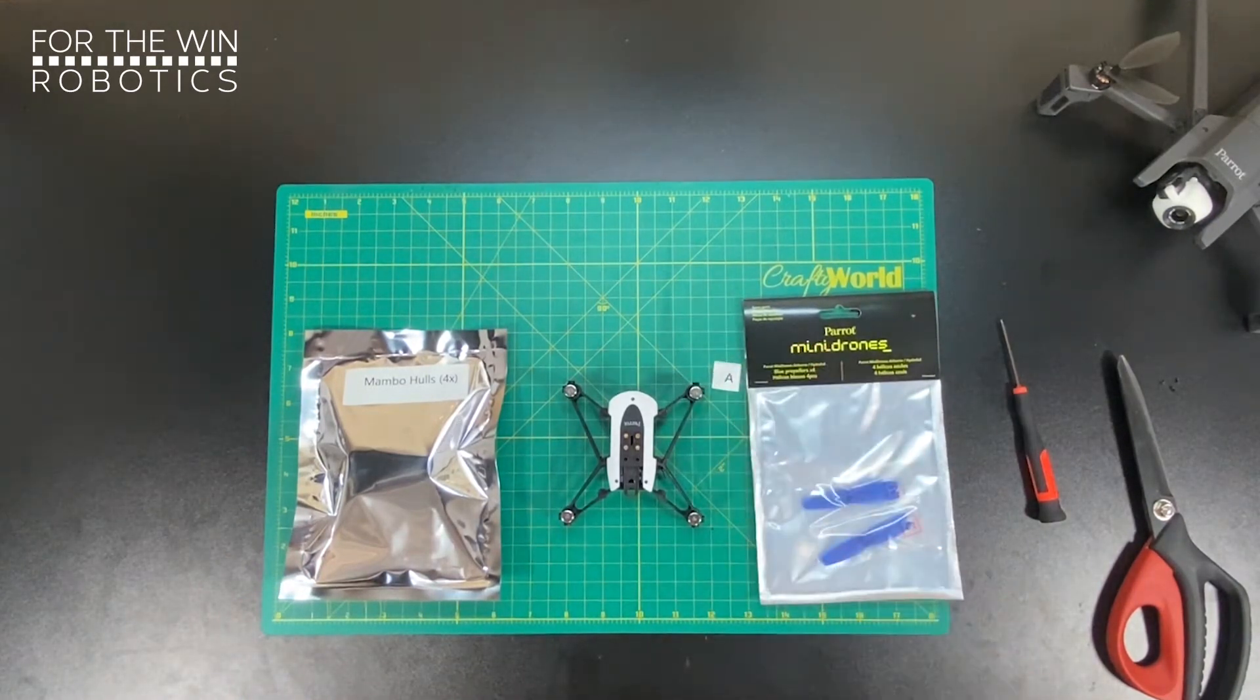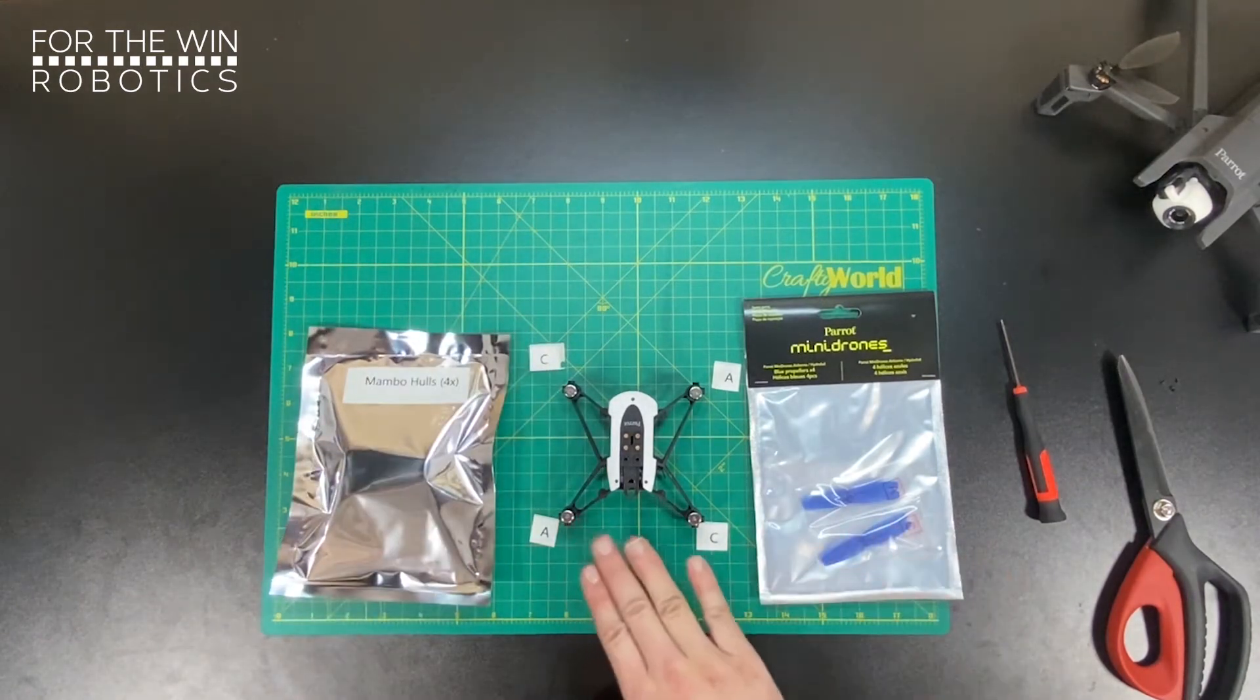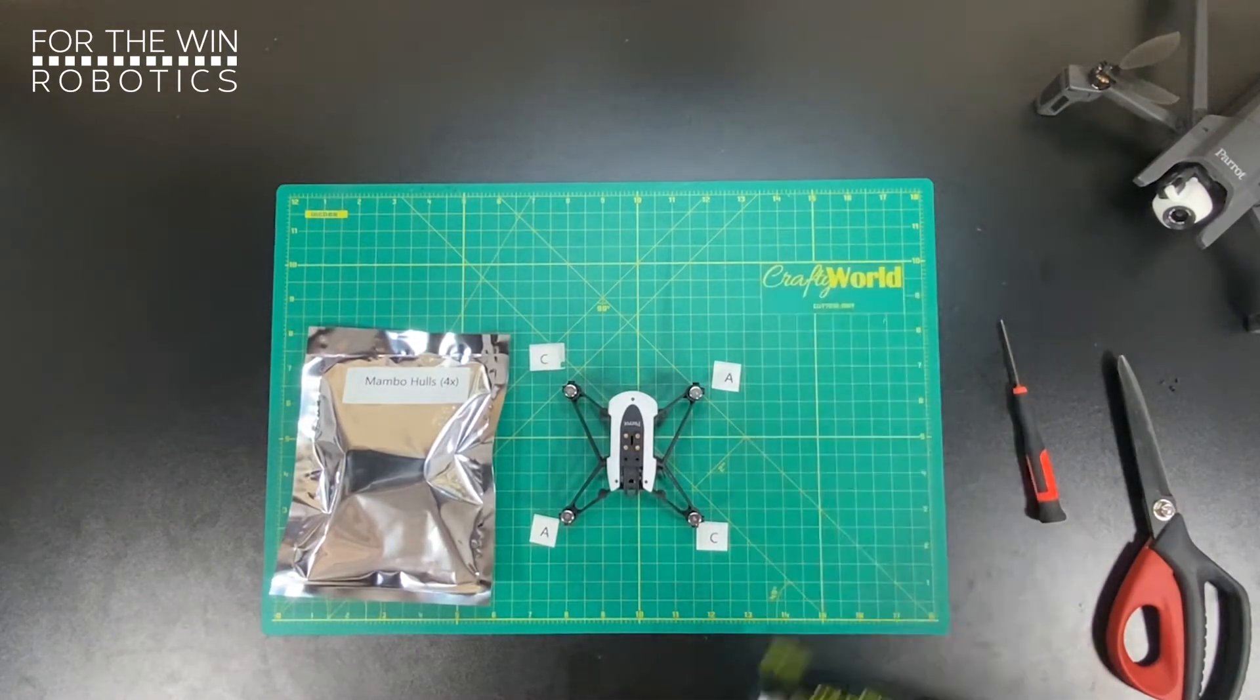So remember A motor front right, the front of the drone is facing that way, A motor rear left, C motor rear right, and C motor front left. So we're going to do the exact same thing with these propellers as we did with the motors.